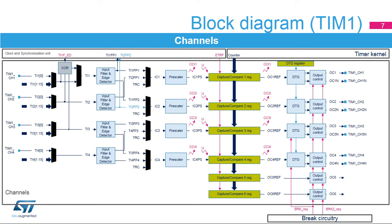Timer 1 supports six independent channels for input capture (except channels 5 and 6), output compare, PWM generation in edge and center-aligned mode, and one-pulse mode output. When a capture or compare event occurs, the corresponding CCi flag is set. Channels 1 to 4 can be output on pins, while channels 5 and 6 are only available inside the microcontroller — for compound waveform generation or ADC triggering.